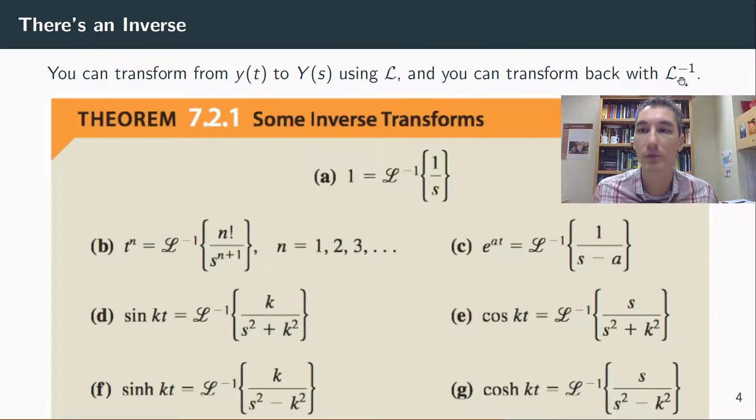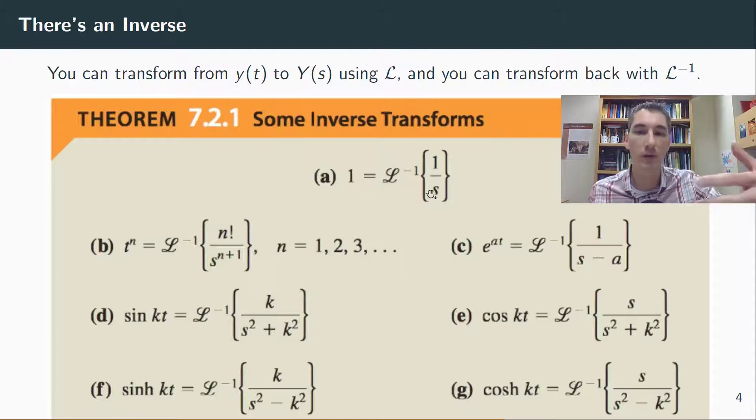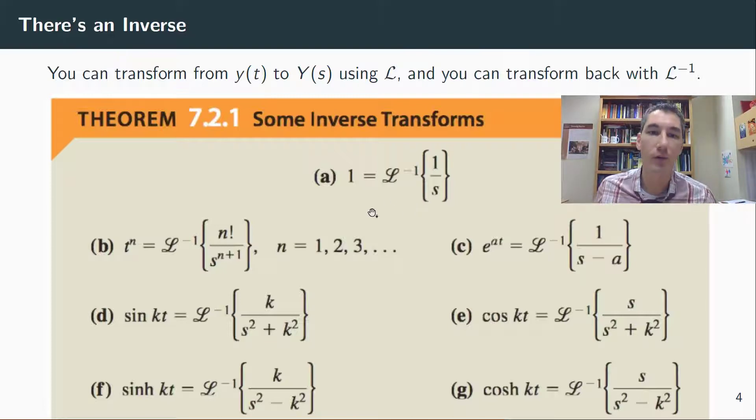Basically we can say that there's an inverse Laplace transform. We use the notation L inverse in this case. If you had 1 over s, the inverse transform would be 1, because the Laplace transform of 1 is 1 over s. So the inverse transform of 1 over s is 1. And it's this idea of inverse transforms that's going to allow us to start solving differential equations with Laplace transforms.